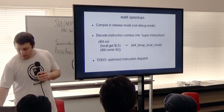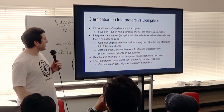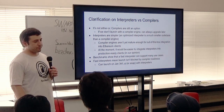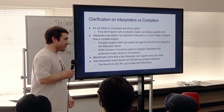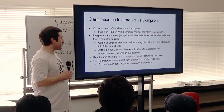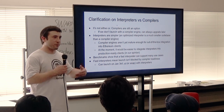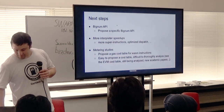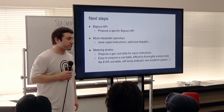A clarification on interpreters versus compilers: now that we're running everything on interpreters and doing things quickly, people ask whether this means we'll never have compiler engines. No — compilers are still an option, but in our opinion they're not ready for launch right now. If we're going to launch on January 3rd, I'd recommend going with an interpreter engine, and we can do a lot of useful things with it. Next steps: propose a specific bignum API, more interpreter speedups, and metering.